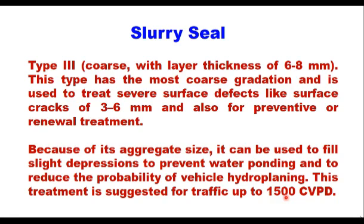Type 3, also called a coarser slurry seal, has a layer thickness of 6–8 mm with the most coarse gradation. It is used to treat severe surface defects like surface cracks of 3–6 mm and also for preventive or renewal treatment. Because of its aggregate size, it can be used to fill slight depressions to prevent water ponding and to reduce the probability of vehicle hydroplaning. This treatment is suggested for traffic up to 1500 commercial vehicles per day.